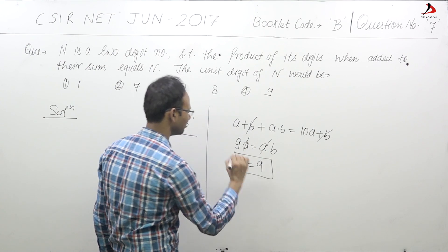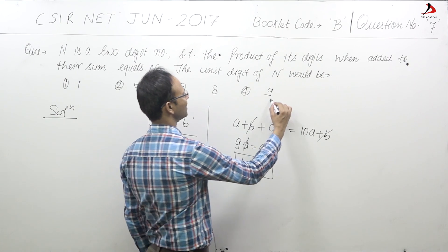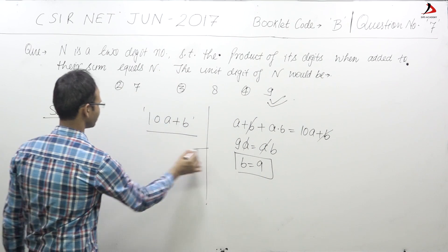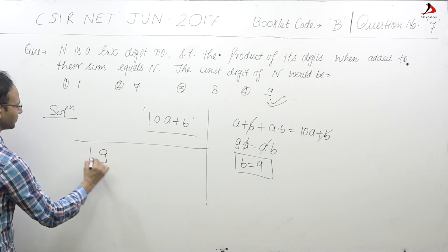So the unit digit of the number is 9. And let us cross verify the answer. Suppose that the number is 19.